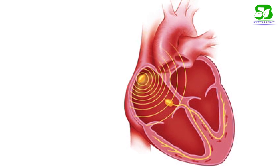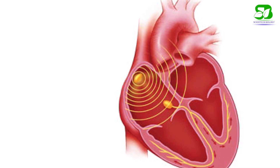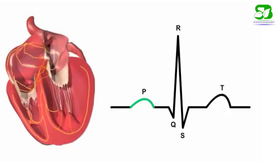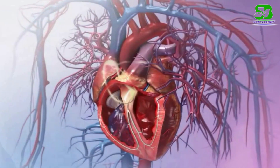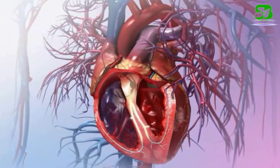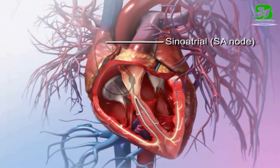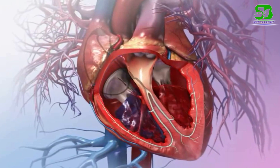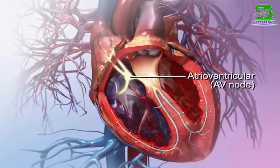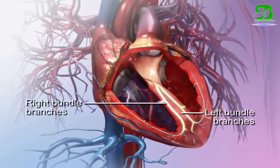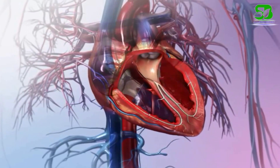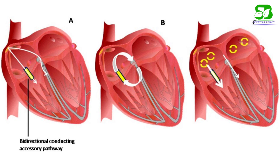The cardiac impulse originating at the SA node is first transmitted over both atria like a concentric wave, thus producing the P wave in ECG. The impulse also travels from the SA node to the AV node via the internodal pathway at higher speed. In the AV node, the speed of impulse conduction is slowed down, and there is a considerable delay of 0.07 to 0.1 seconds before excitation spreads over the ventricles. This AV nodal delay allows atrial systole to complete before the ventricle is excited.